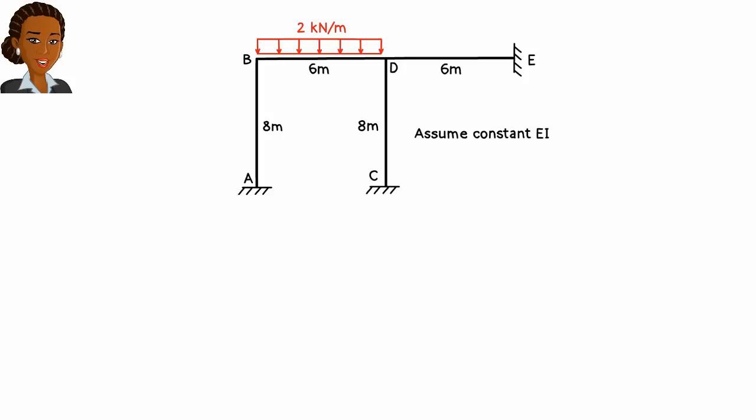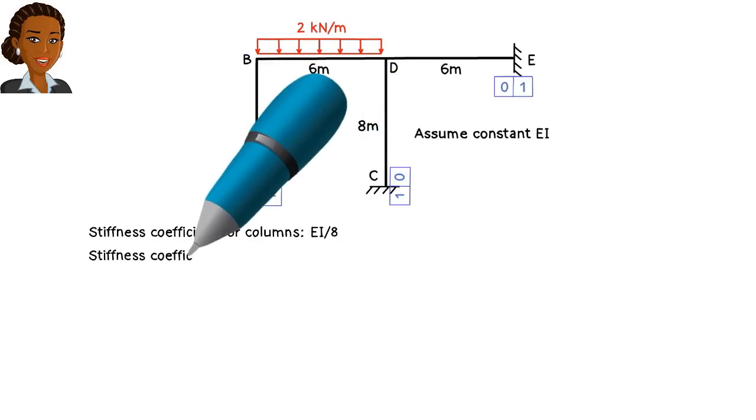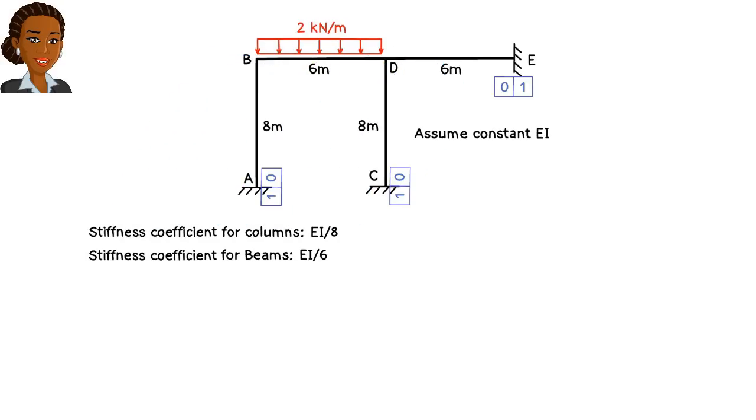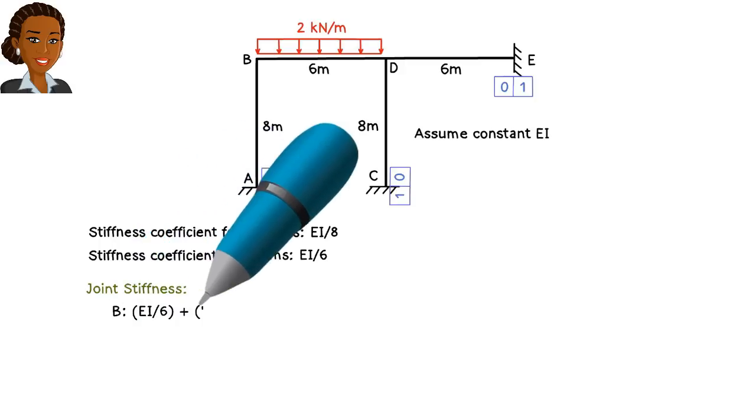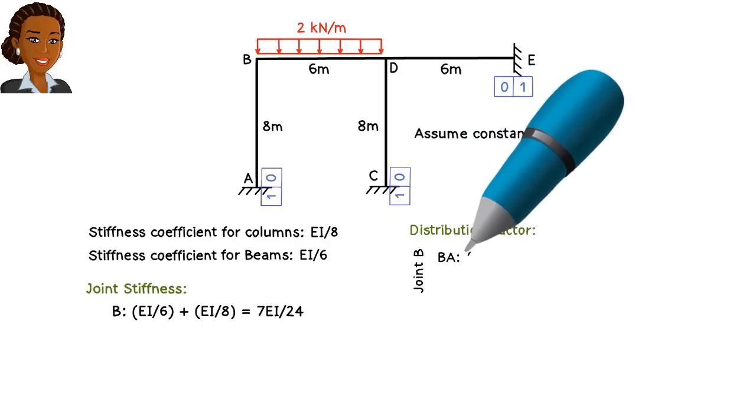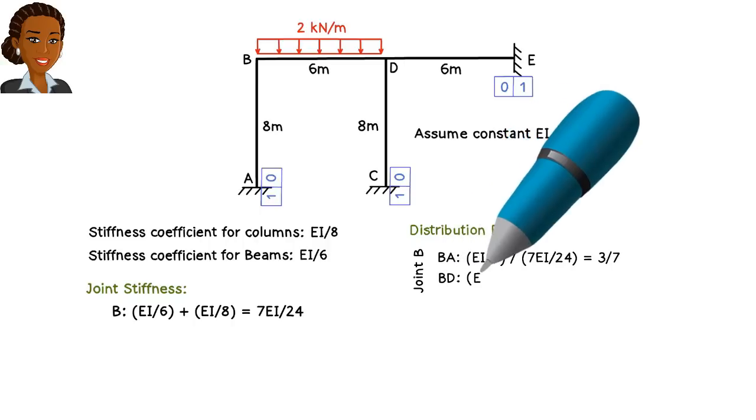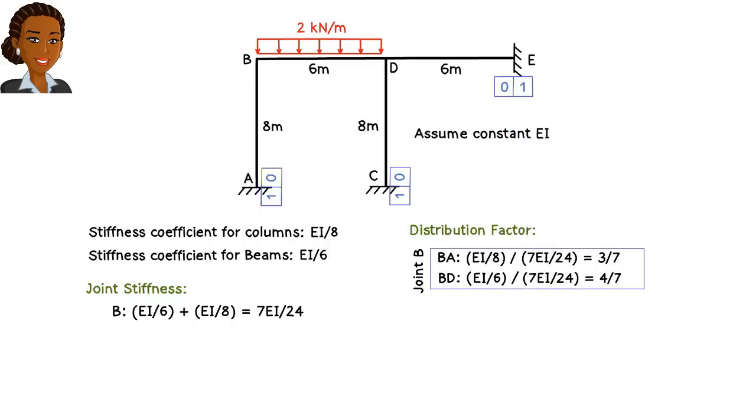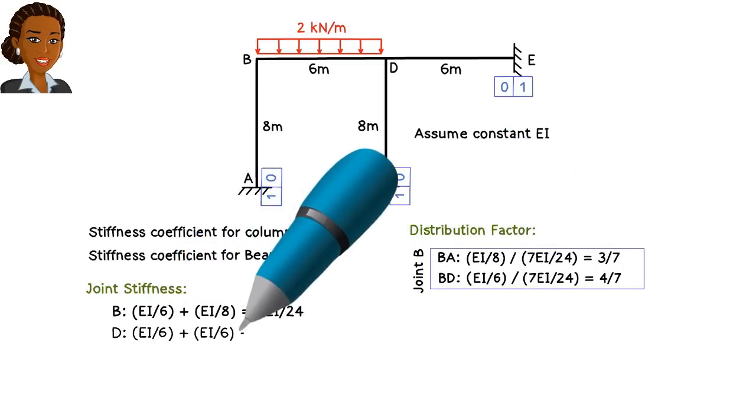Let's start by determining the distribution factors. At the fixed supports, we have the standard values. For joint B, we can write the distribution factors, and for joint D, we get the corresponding values.